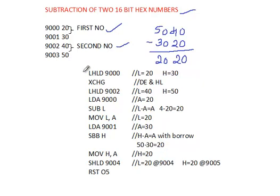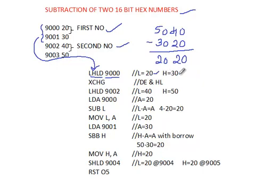First, we have to load the first number into some registers. I'm using LHLD 9000, which loads the values from memory locations 9000 and 9001 into the HL register pair. At 9000 and 9001 we have values 20 and 30. The L register takes 20, which is the lower byte of the first number, and H takes 30, which is the higher byte of the first number. So now HL holds 20 and 30.